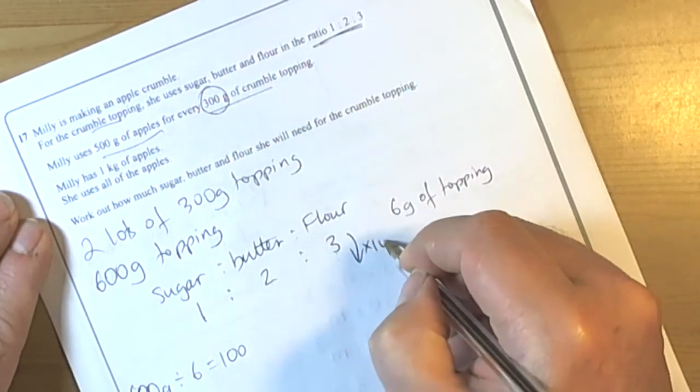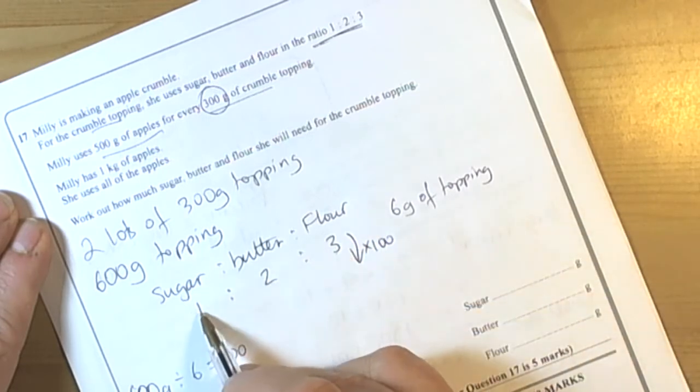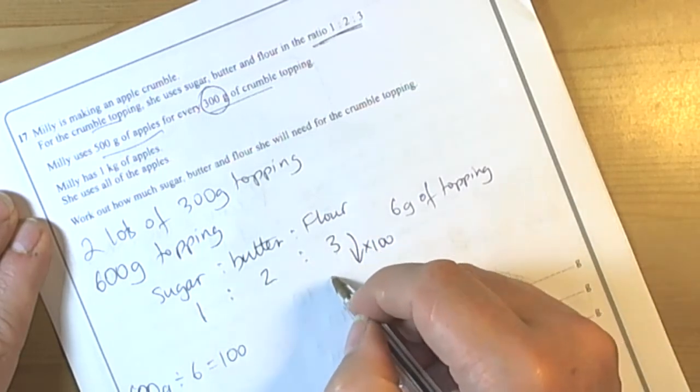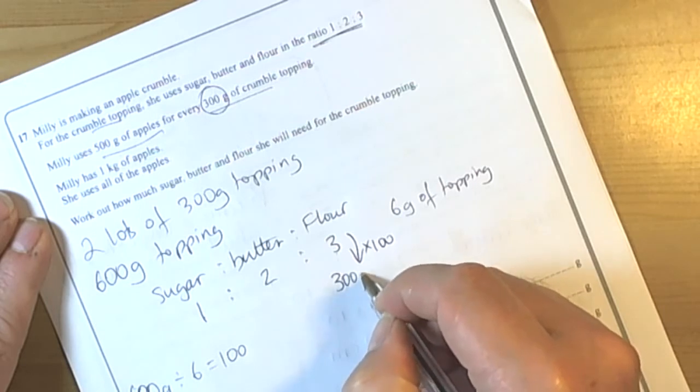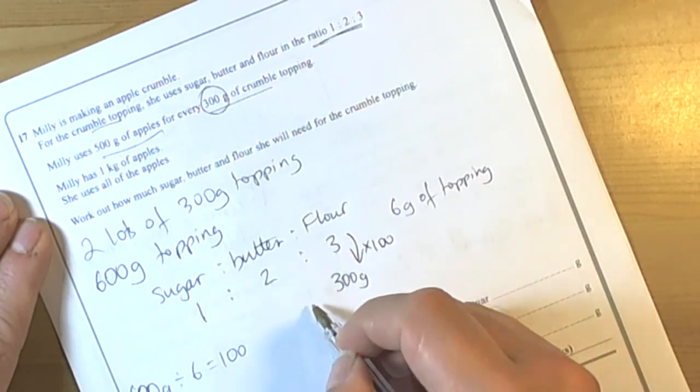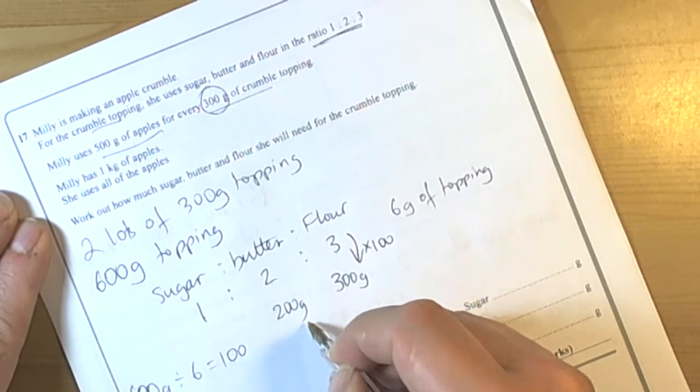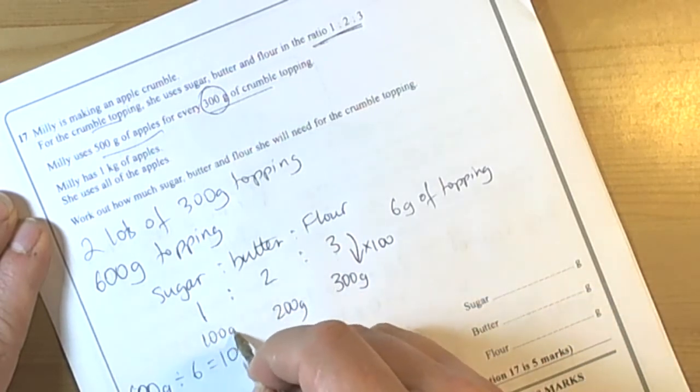So we're literally going to have to multiply each of our original ratio by 100 to find out how much of each of the component ingredients we need. So we need 300 grams of flour, 200 grams of butter, and 100 grams of sugar.